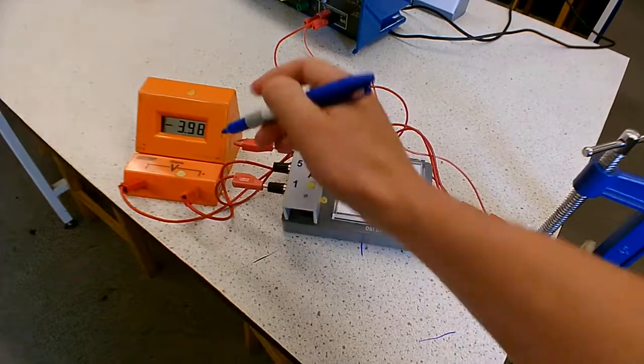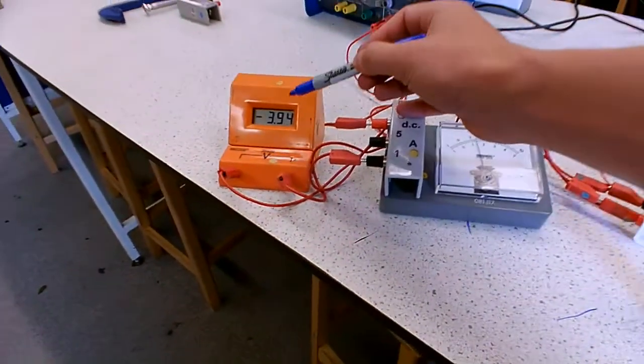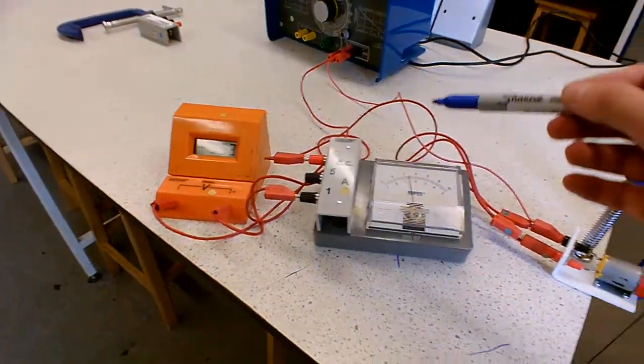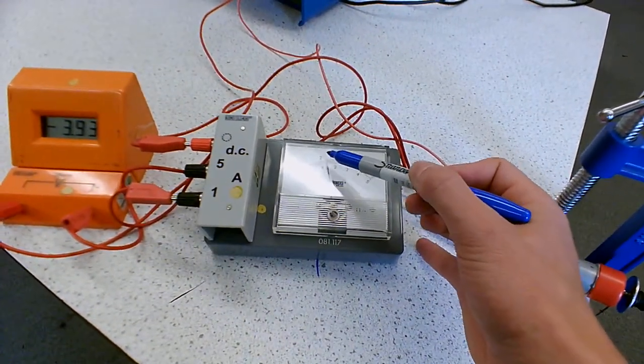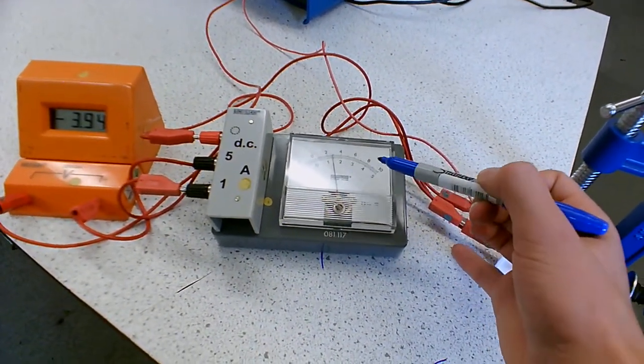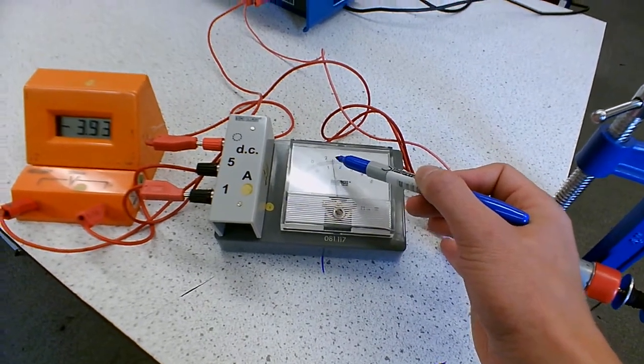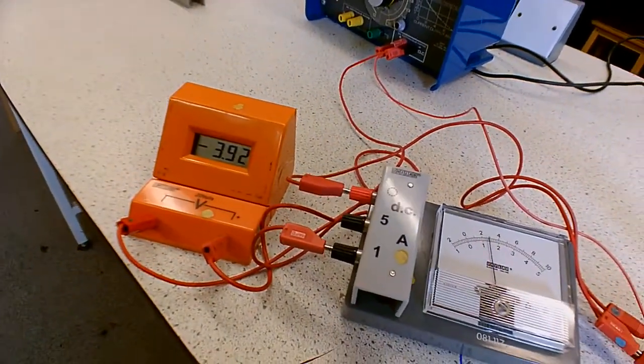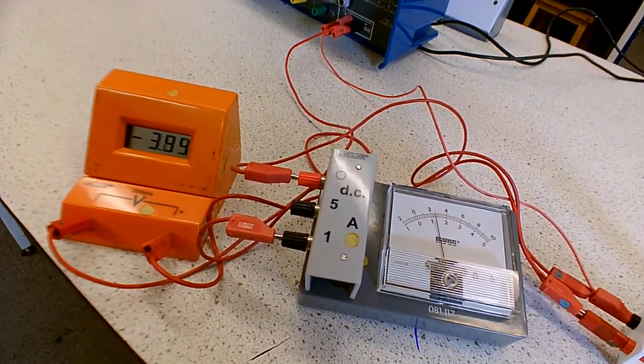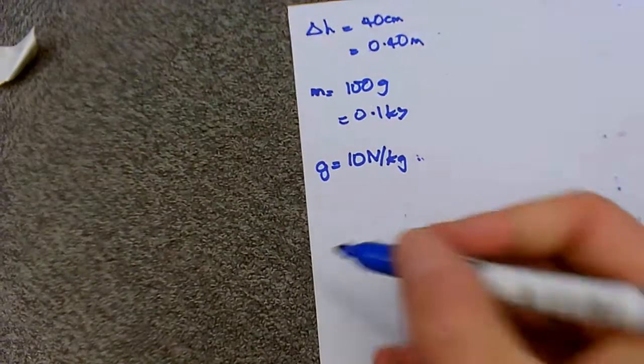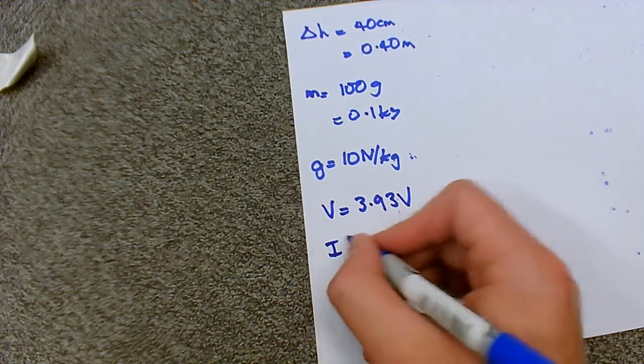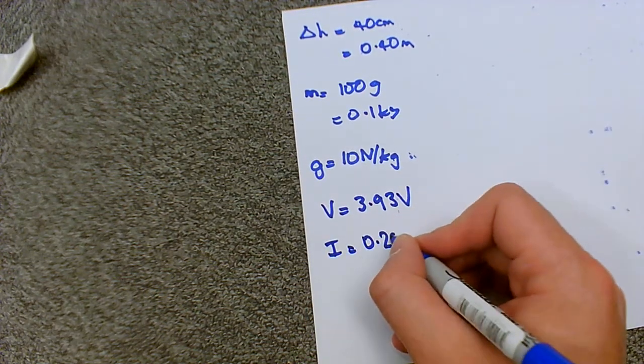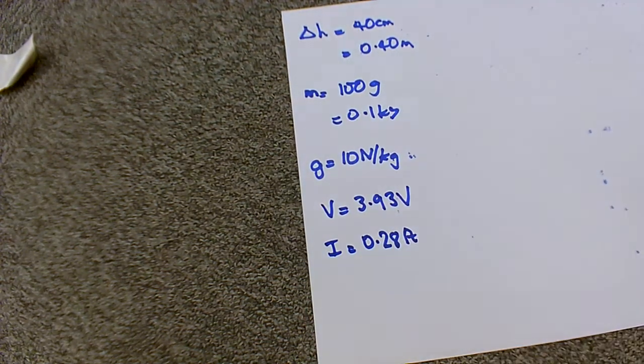Okay so we can see our potential difference is 3.94. The current is 0.28. Okay so those are our readings. So 3.93 and 0.28. So let's record those. So 3.93 volts. Current was 0.28 amps.